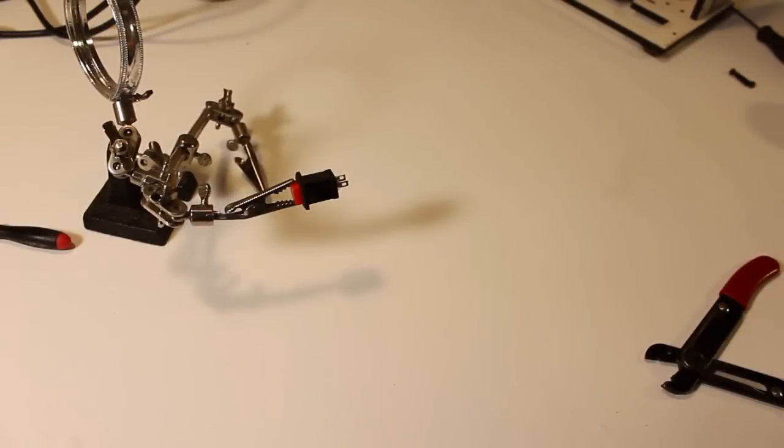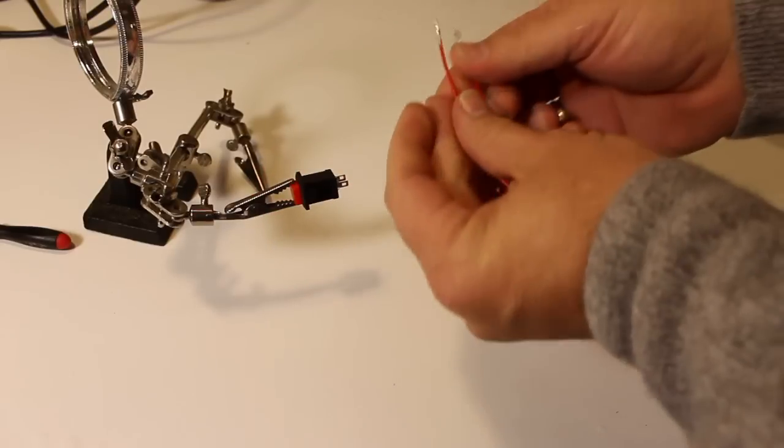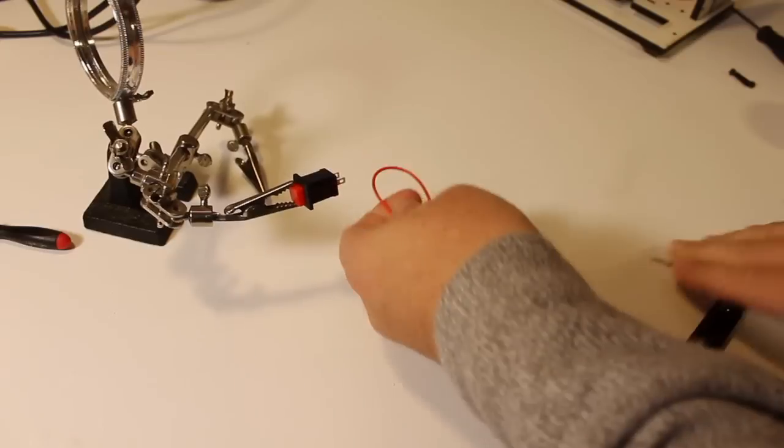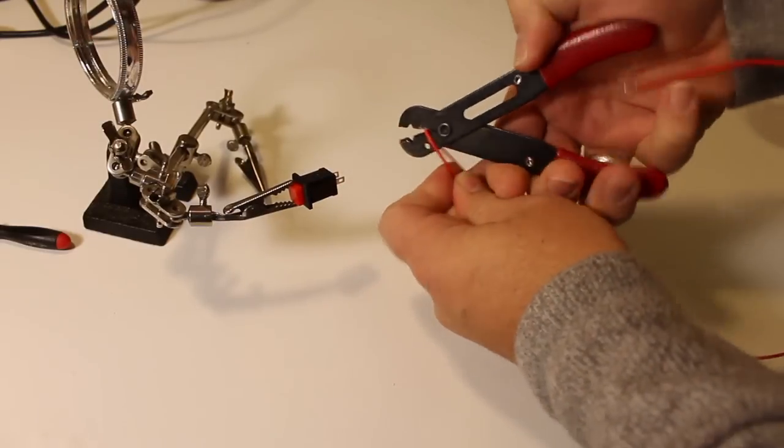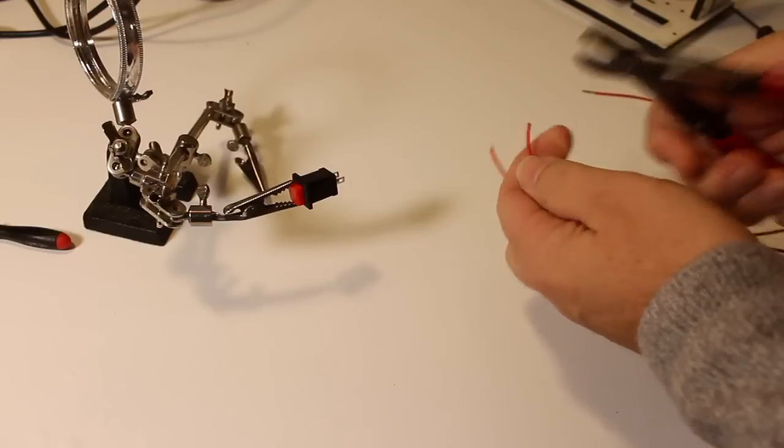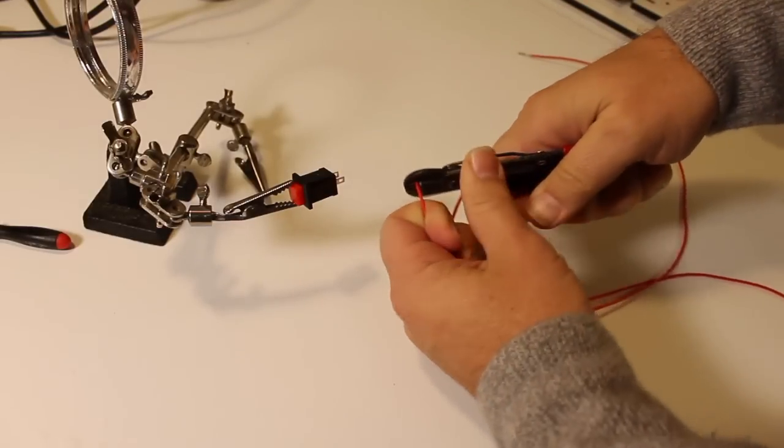Next we're going to work on the buttons and the wiring. So start out by taking all the wires and cutting them in half. You'll end up with 16 separate wires and start off by stripping the ends of 13 of those.